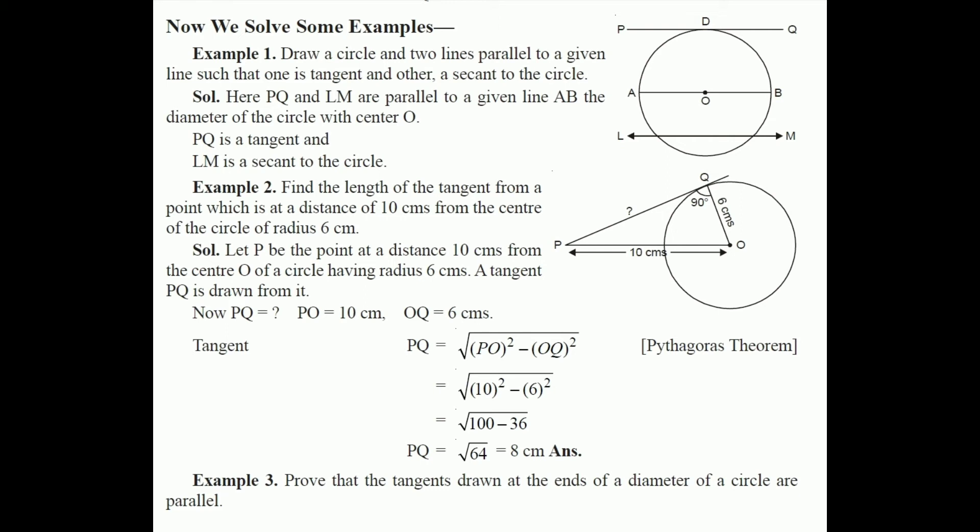Looking at triangle OQP, it is a right-angled triangle because the radius makes a right angle with the tangent. Using the Pythagorean theorem — hypotenuse squared equals the sum of the squares of the other two sides — we get PQ = √(PO² − OQ²) = √(10² − 6²) = √(100 − 36) = √64 = 8 cm. Therefore PQ equals 8 cm.